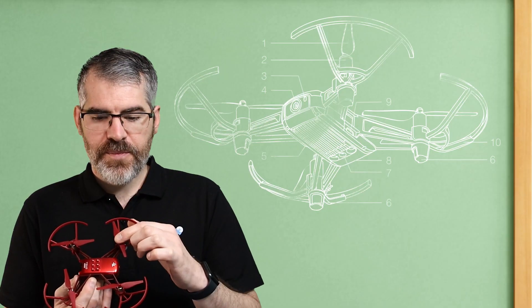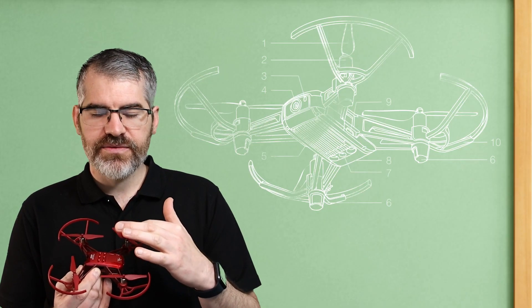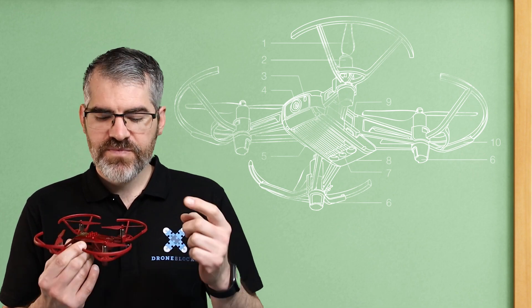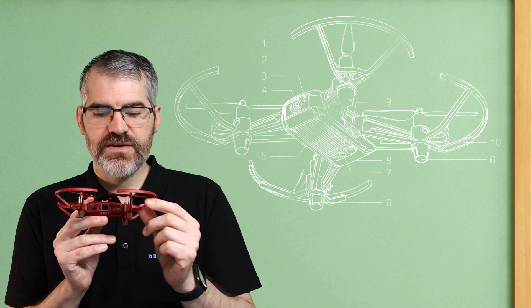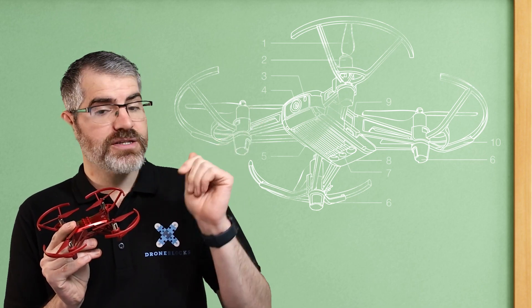Number one, the propellers are over here and they're what you think of propellers, things that spin. You have the motors. Now these are brushless little motors over here that you can see and you'll have a much clearer picture over there.